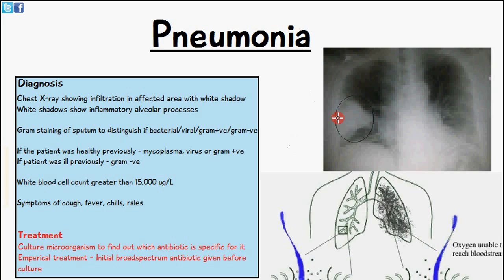You can see from the diagram on the right we have a lung which is infected with pneumonia. You can see the infected region by this white shadow, and the white shadows are going to show the inflammatory alveolar processes.